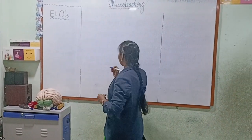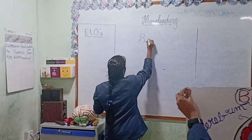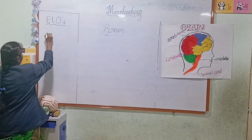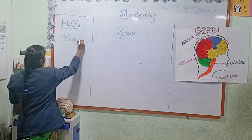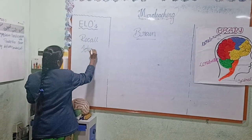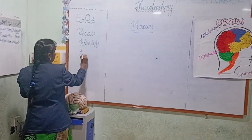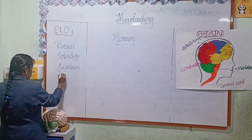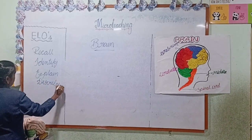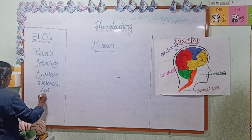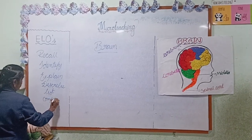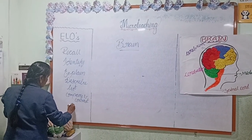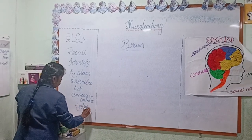So, now today I am going to explain about the brain. For this topic, you can achieve the following objectives: recognize, identify, explain, describe, and compare and contrast, and evaluate.